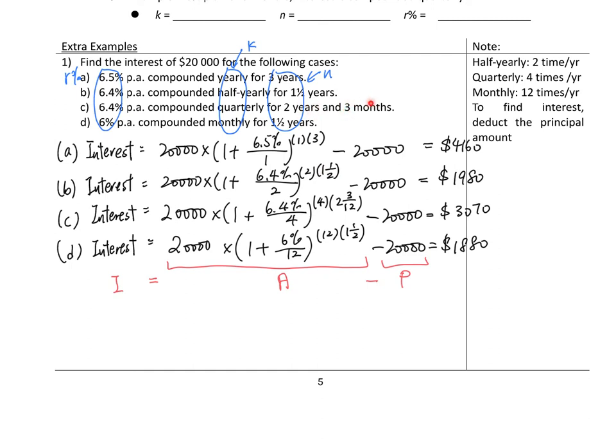Percentage: 6.5%, 6.4%, 6.4% 和 6%. I just copied here. And then 3 years, 3年, 1.5 year, 2 years and 3 months, 二又十二分之三. And then finally would be 1.5 year.